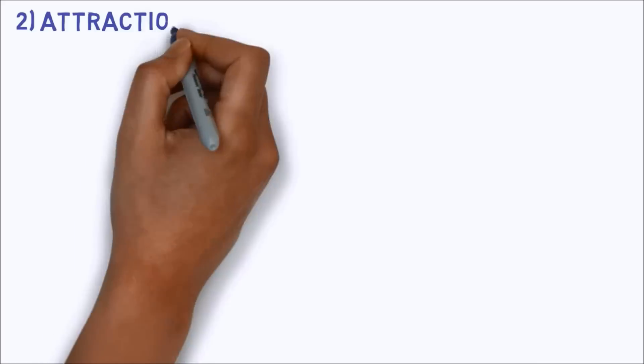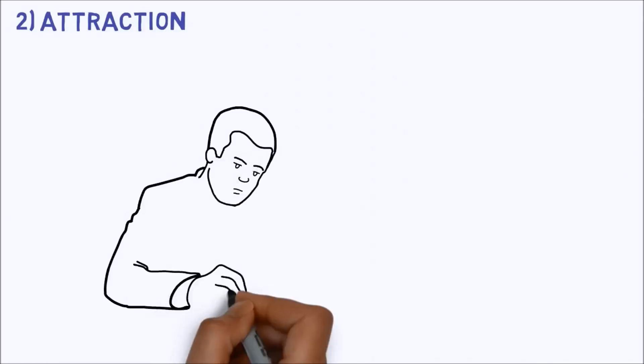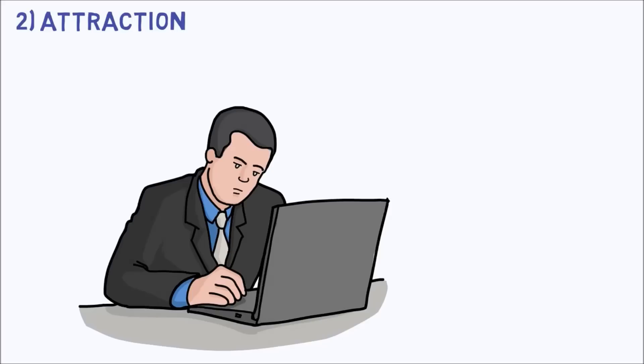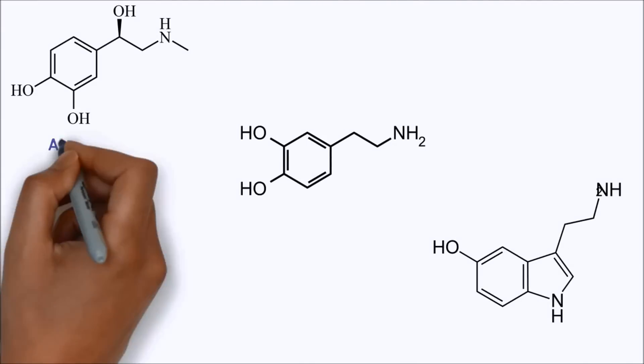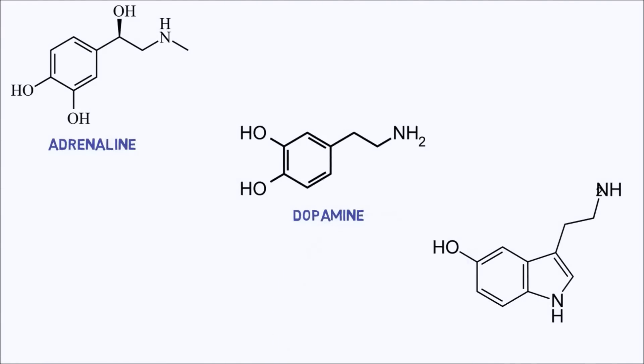Stage 2 of love is attraction. This is the amazing time when you are truly lovestruck and can think of little else. Scientists think that three main neurotransmitters are involved in this stage: adrenaline, dopamine, and serotonin. Let's go through these chemicals one by one.